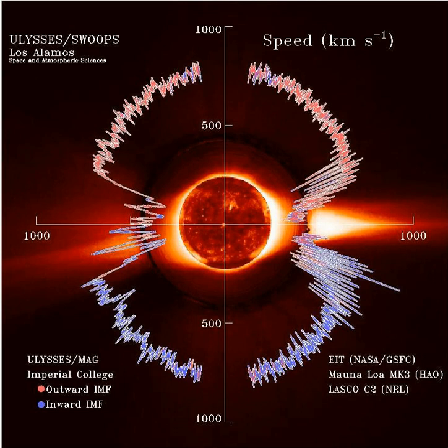Thus, the total mass loss each year is about 2 to 3 × 10⁻¹⁴ solar masses, or about 1.3 to 1.9 million tons per second. This is equivalent to losing a mass equal to the Earth every 150 million years. However, only about 0.01% of the Sun's total mass has been lost through the solar wind. Other stars have much stronger stellar winds that result in significantly higher mass loss rates.